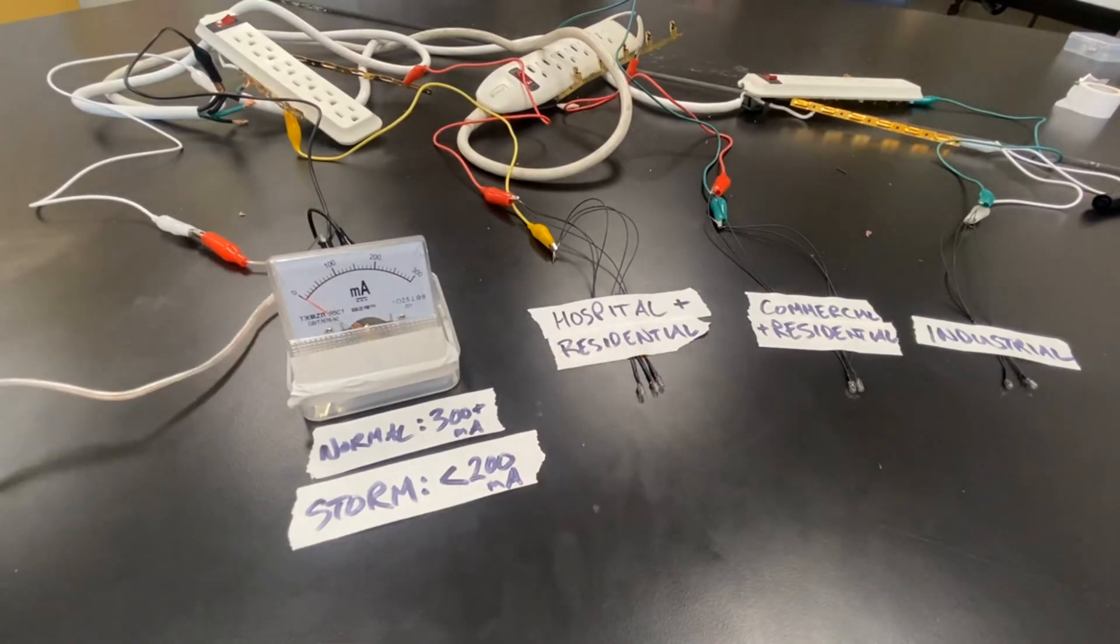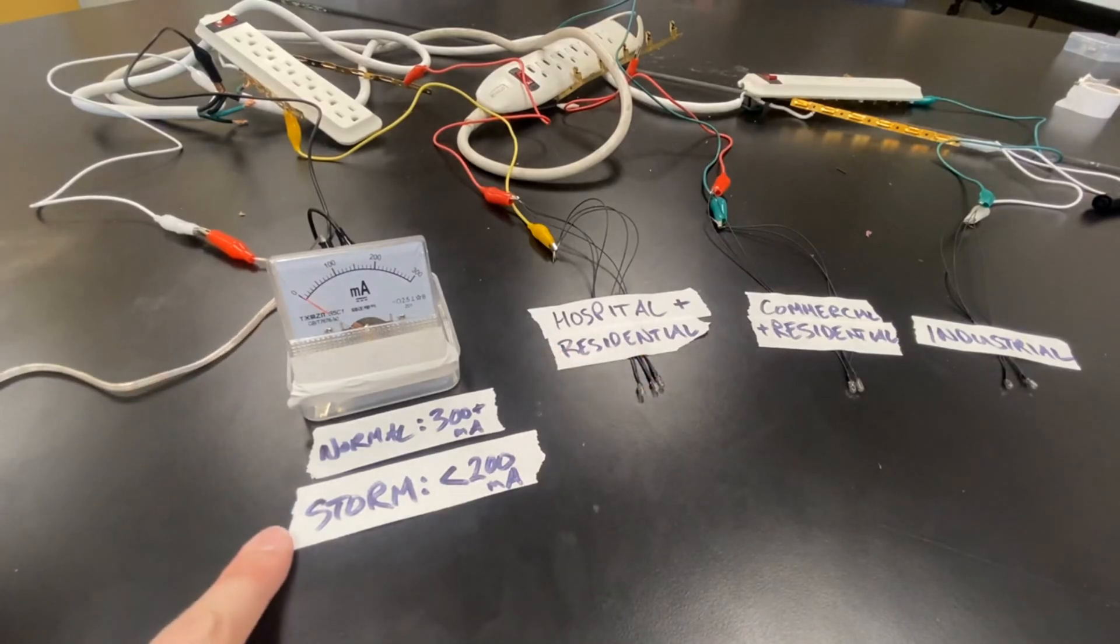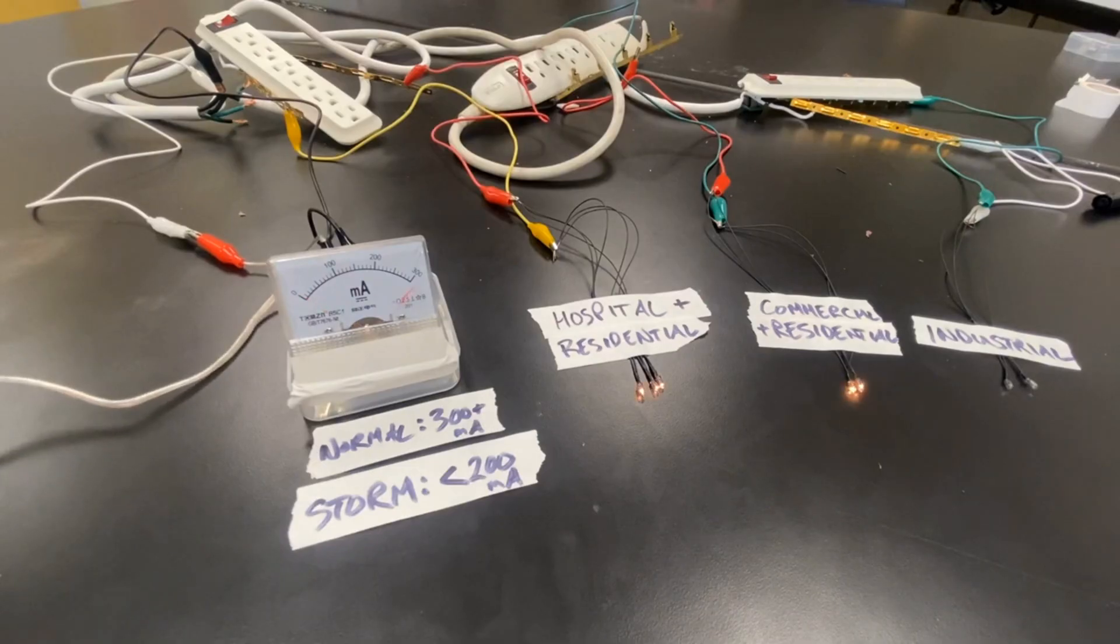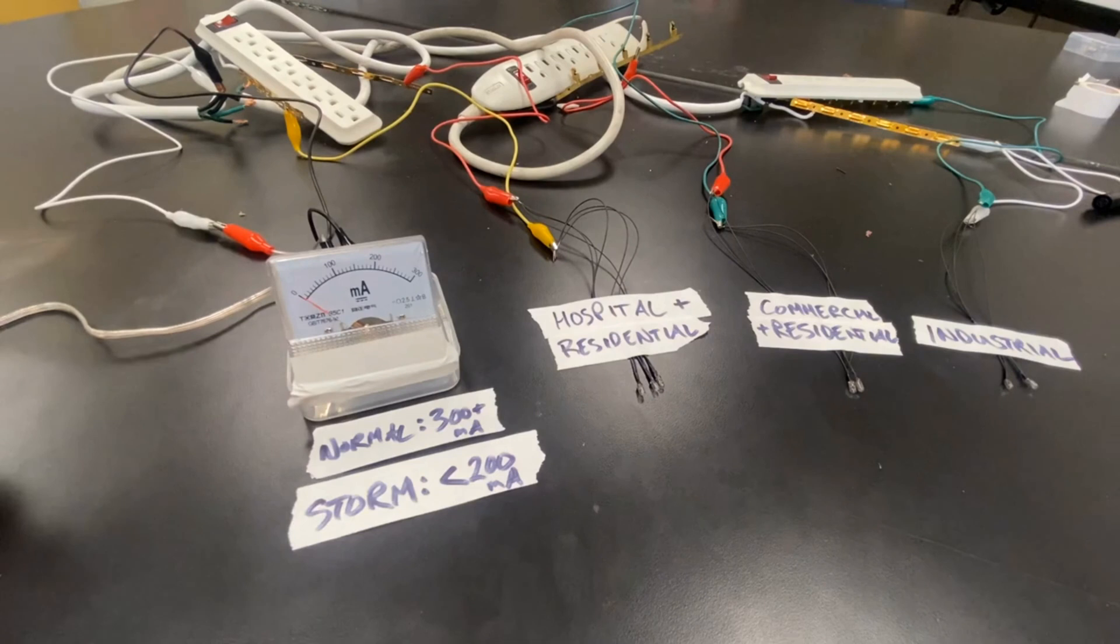And if we had more power to go around, that is like if the storm supply was greater, then we wouldn't have to make this tough choice. We could, for example, deliver power to both of these districts. But when supply and demand don't match up, we are forced to make tough decisions.